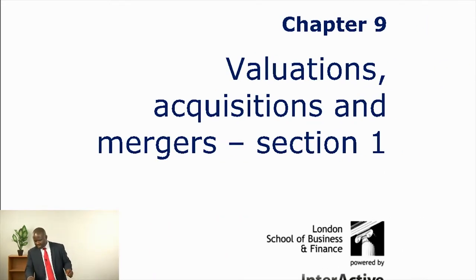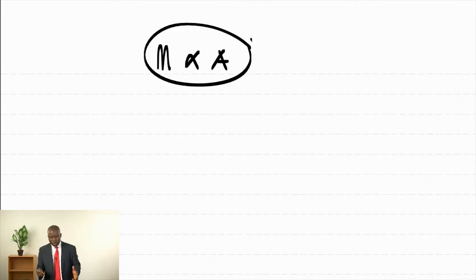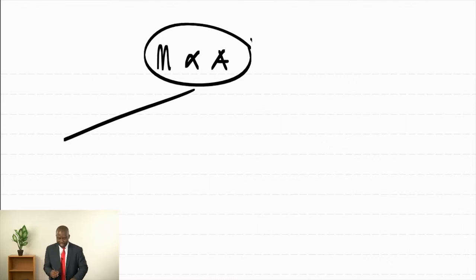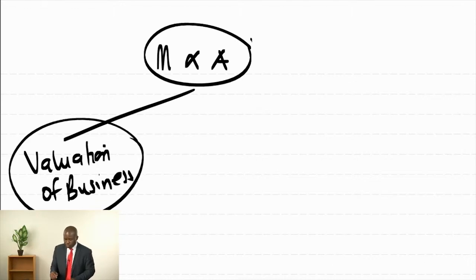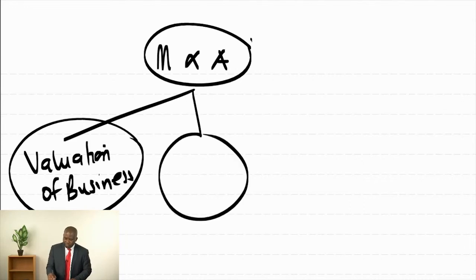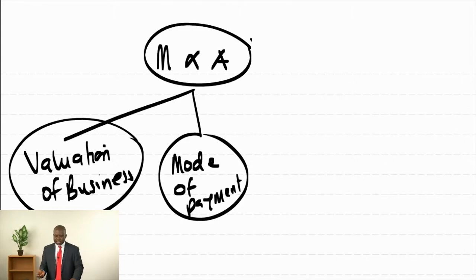Before I start, let me simplify the nature of mergers and acquisition questions we are likely to face in the examination room. Questions on mergers and acquisitions are from these areas. If one company is going to buy another company, the first responsibility will be how much should we pay, and how much we should pay is answered by valuation of business. We need to value the business to see how much we should pay. Then we also have to know if we have to pay a hundred thousand, should we pay using cash or should we pay using debt or shares — that is referred to as mode of payment. It could be cash or it could be share exchange.